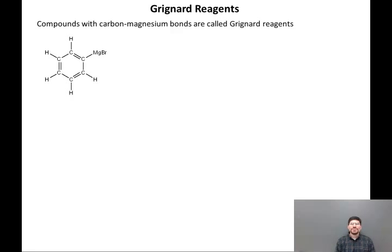Grignard reagents are among the most important reagents you will encounter in your study of organic chemistry. A Grignard reagent, by definition, is a compound with a carbon-magnesium bond.